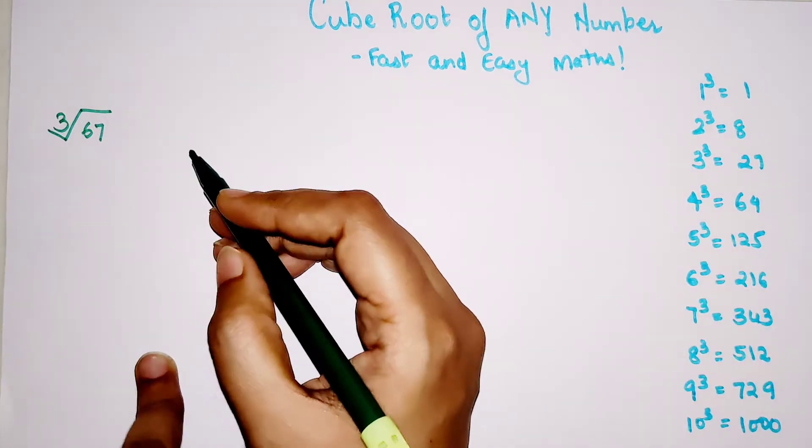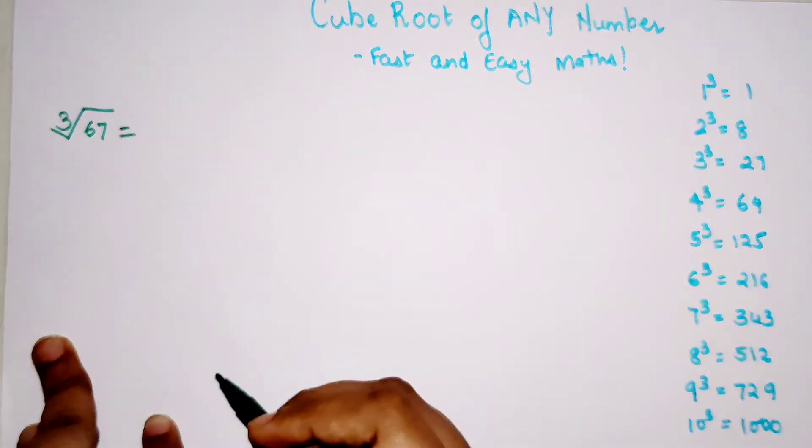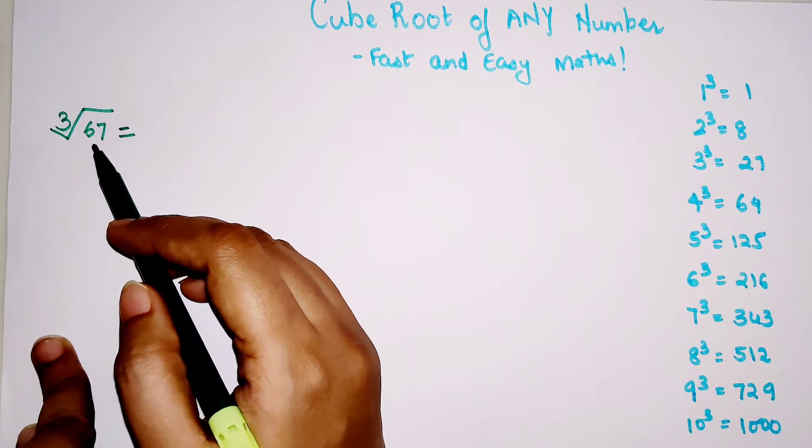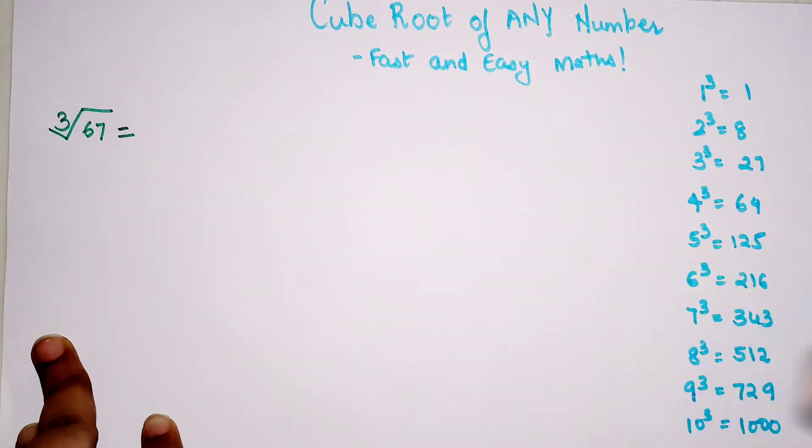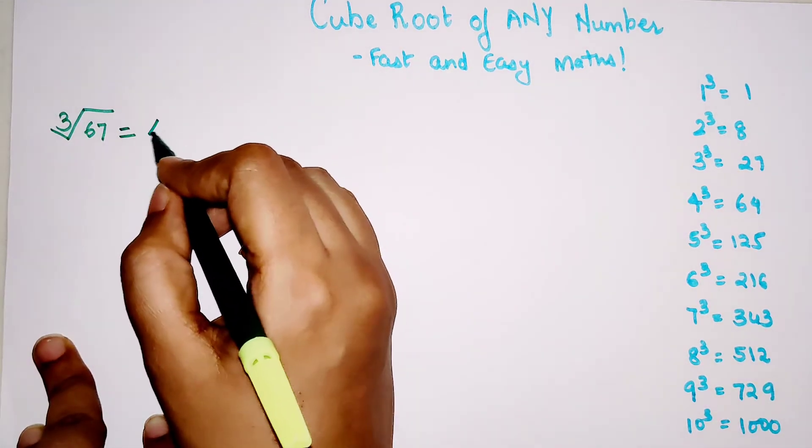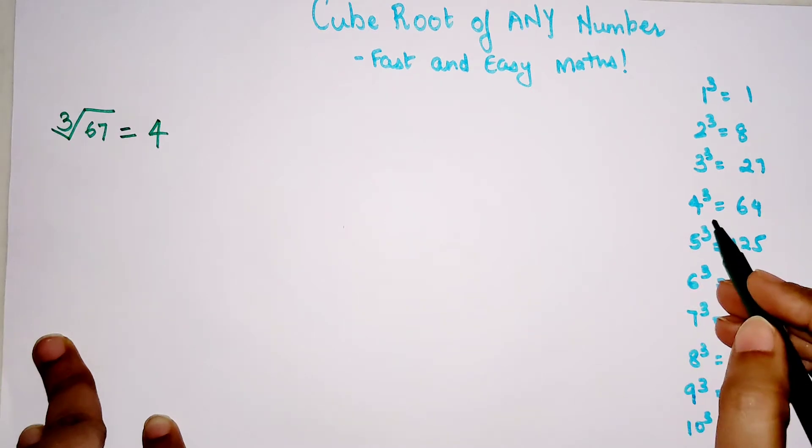Now, the first thing you should do is, we're trying to find the cube root of 67. First we will place 67 in between the answers of these cubes. We'll say that 67 is very close to 64, right?